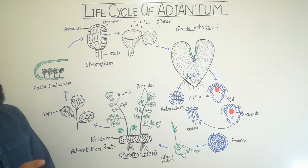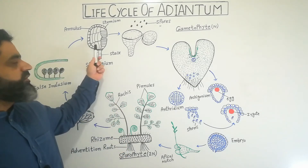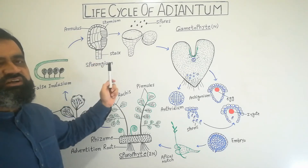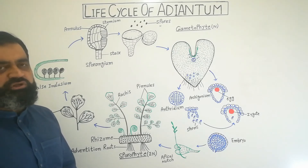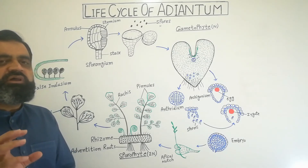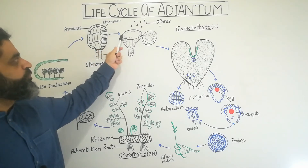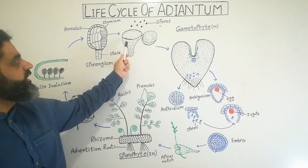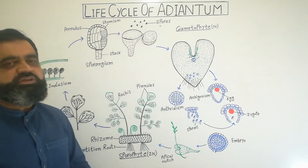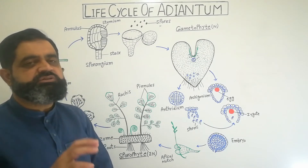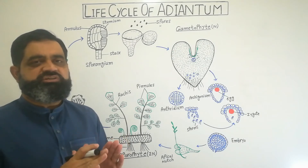The sporangium contains a spore mother cell which is diploid. This cell undergoes meiosis, which is a reduction division, and produces spores that are haploid. Once spores are produced inside the sporangium, the sporangium matures and with the help of sunlight it breaks apart from the middle and opens. This opened sporangium releases many haploid spores, which are dispersed by air and drop nearby in wet places near water.